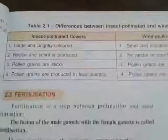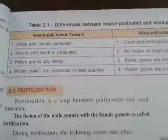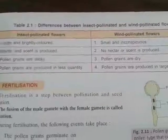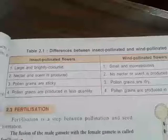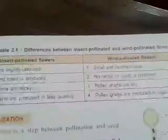To recap the main points: insect pollinated flowers are large and brightly colored, while wind pollinated flowers are small. In case of insect pollinated flowers, scent is produced — nectar and scent are quite similar. In wind pollinated flowers, no nectar and scent is produced. These are two basic important points.